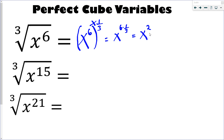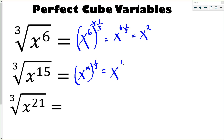So basically, the cube root of x to the 6 is x squared. I would never write all those steps in practice — I'd just do it straight up. Let me do it one more time: x to the 15. In our heads, that's x to the 15 times 1 over 3. I replace the cube root with an exponent of 1 over 3, and 15 times 1 over 3 gives x to the 5.